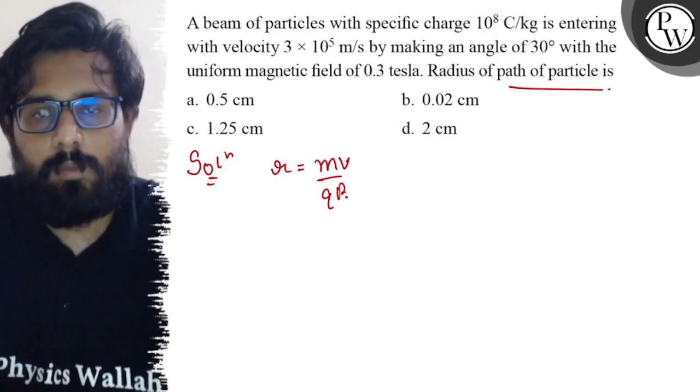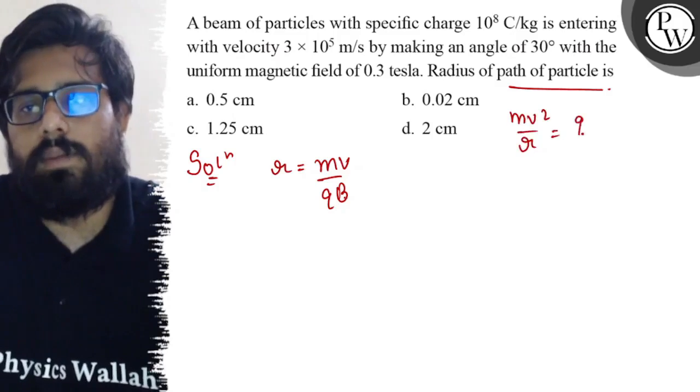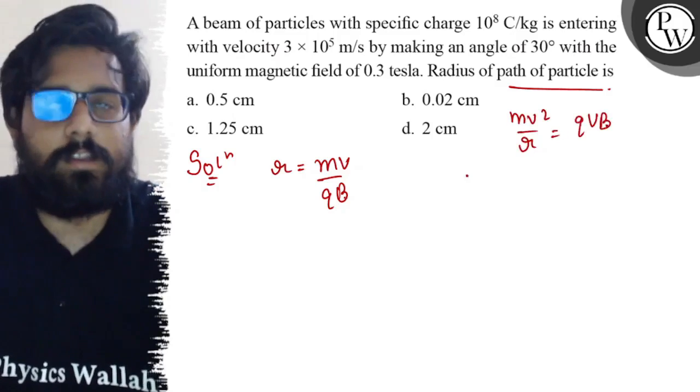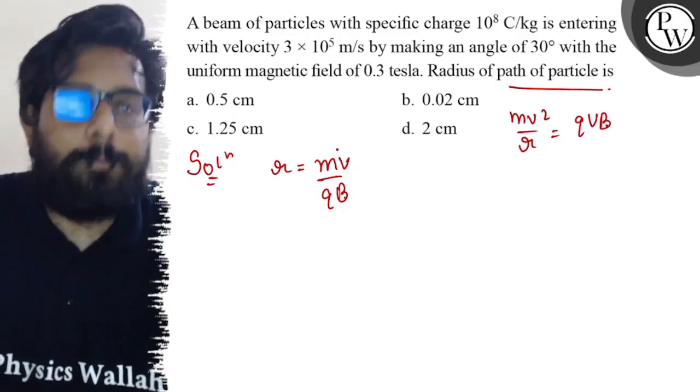Where does this formula come from? We compare mv squared by r with qBv. We balance these, so from here we get r equals mv by qB. Now for a circular path with the magnetic field...